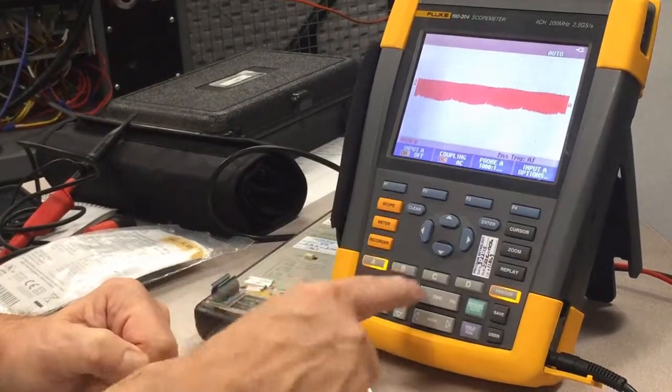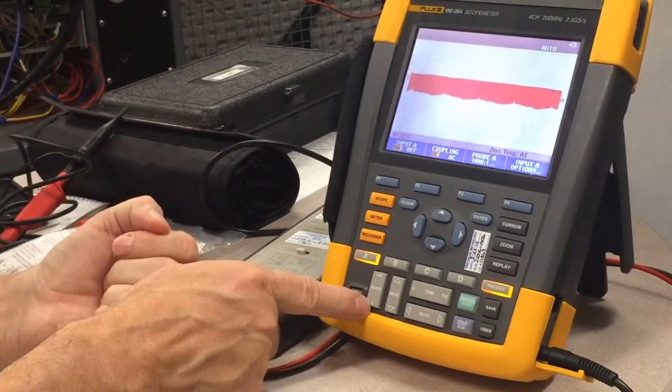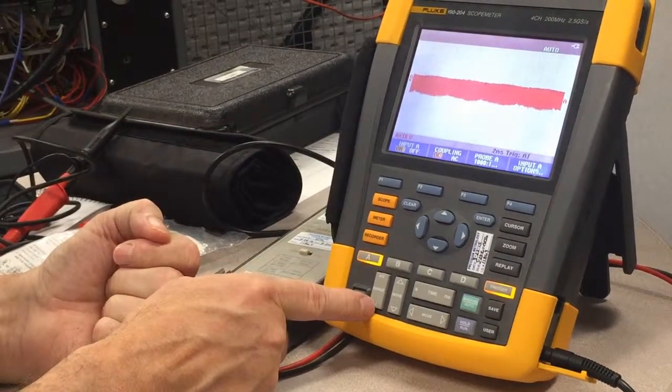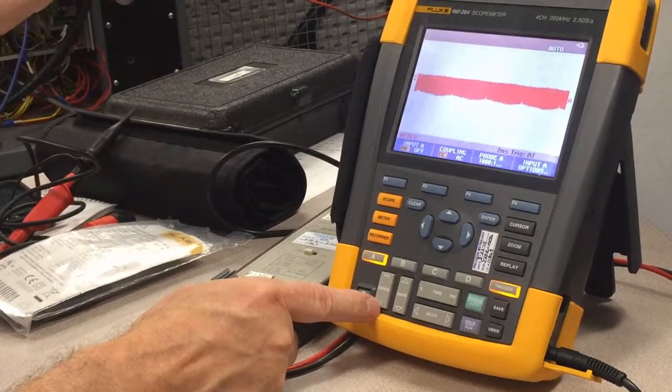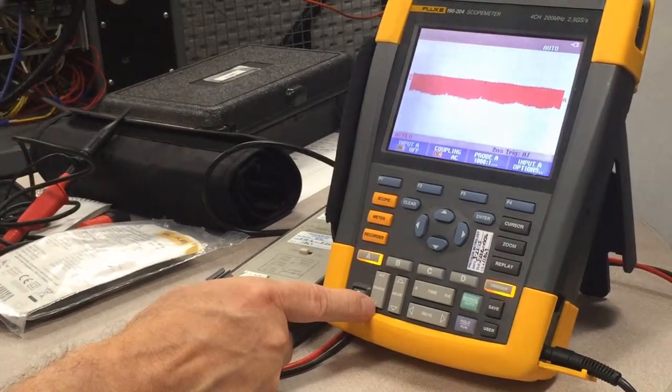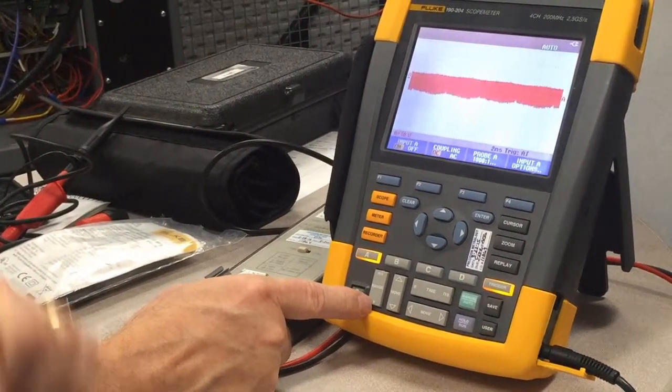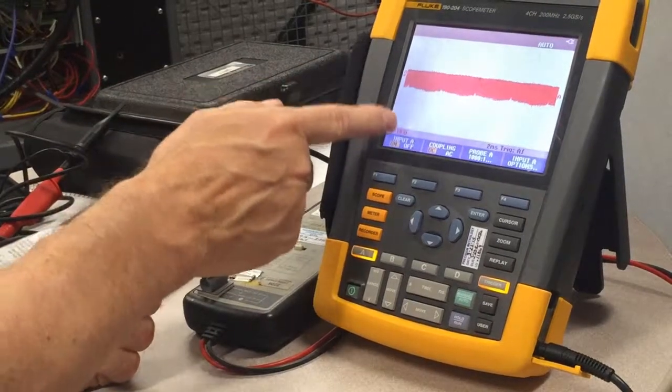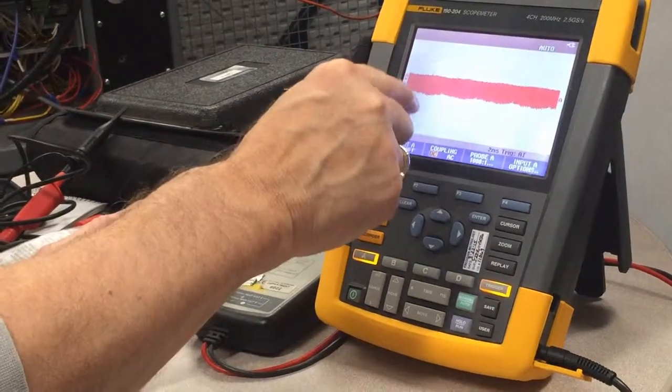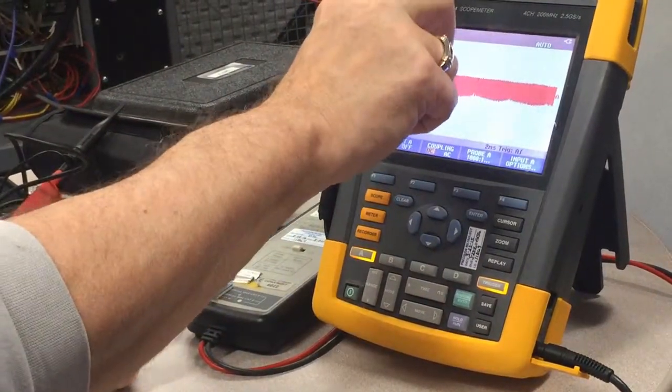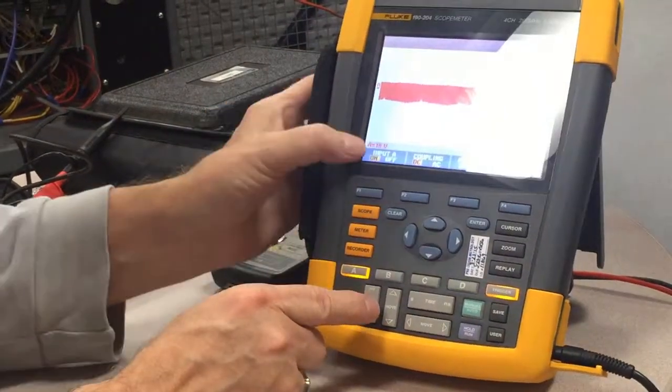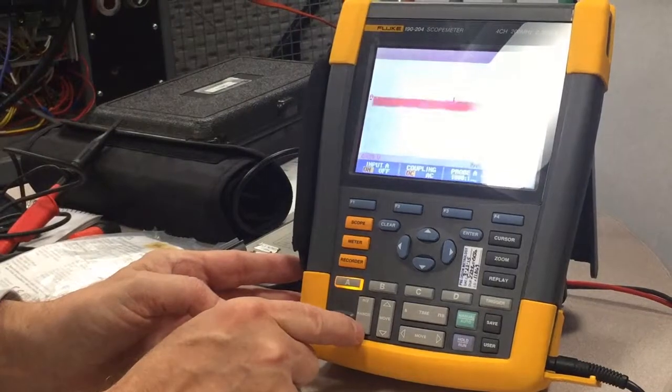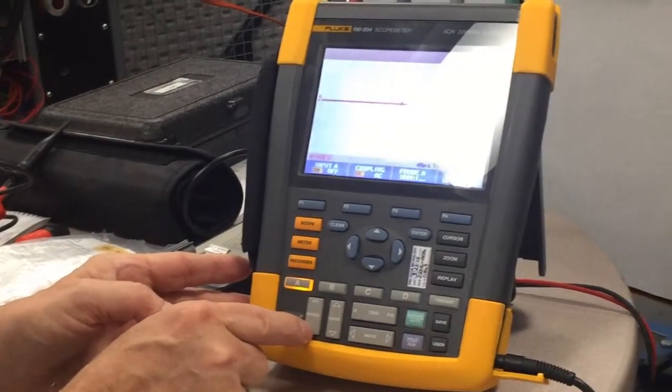Okay, now make sure that the input is on, your coupling is DC, your attenuation is 1,000 to 1. And the next thing we're going to do is we're going to set the vertical scaling, the volts per division. In this test of reflective wave measurement, we know approximately that the peak voltage is going to be well over 1,000 volts. So our volts per division has to be set so when we get the waveform, it doesn't go off the screen. So we're going to increase the voltage per division. Right now it's set for 10. We're going to increase it to 500 volts per division.